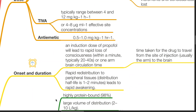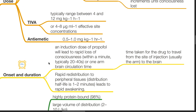Onset and duration: An induction dose of propofol leads to rapid loss of consciousness within a minute, typically 20 to 40 seconds, or in one arm-brain circulation time — the time taken for the drug to travel from the site of injection, usually the arm, to the brain. Rapid redistribution to peripheral tissues leads to rapid awakening.